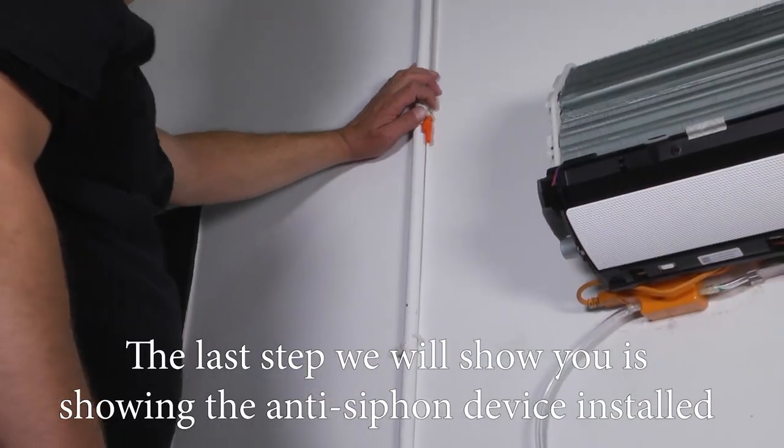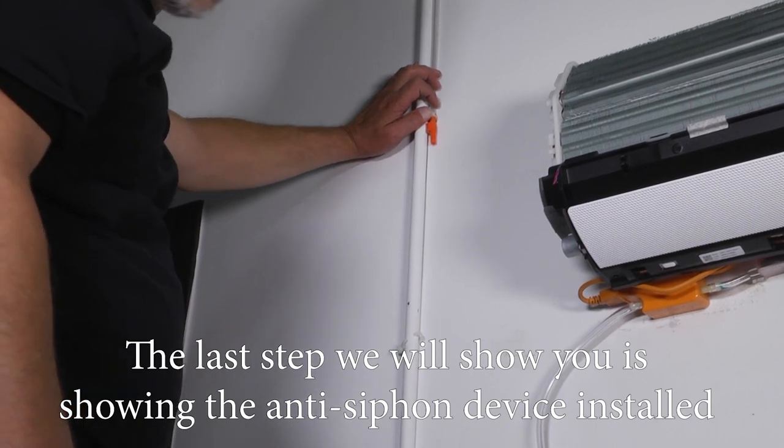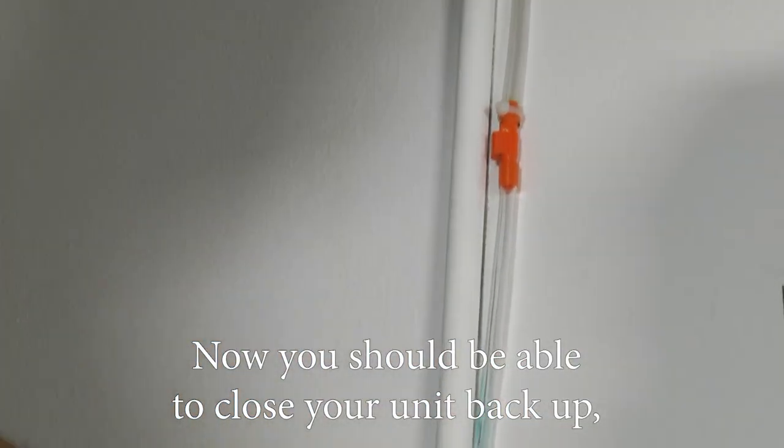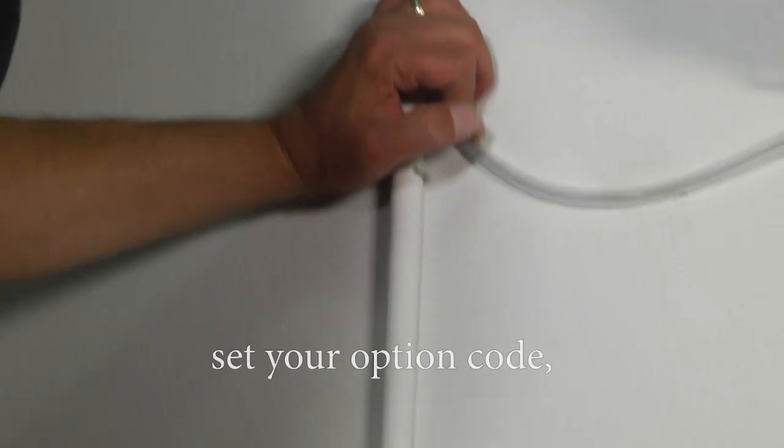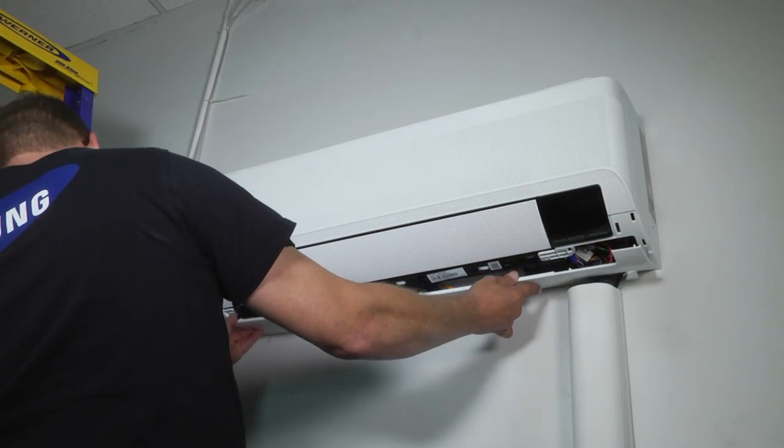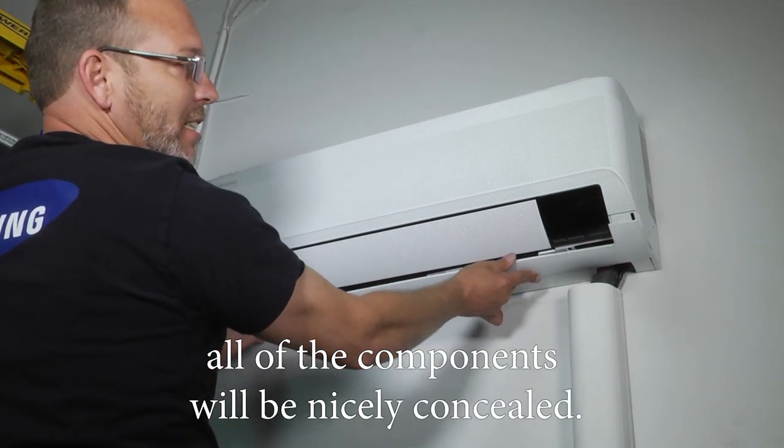The last step we'll show you is showing the anti-siphon device installed and connected up to your tubing from your pump. Now you should be able to close your unit back up, set your option code, and you should be good to go. And you'll find that once we close the bottom panel, all of the components will be nicely concealed.